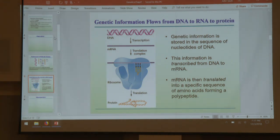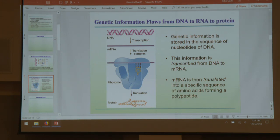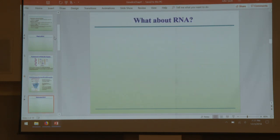We have what we call the central dogma. Genetic information is stored in the sequence of nucleotides, which gets transcribed and then translated. So DNA exists to store information. We can transcribe and then translate it to make products — in this case a polypeptide, also known as a protein.